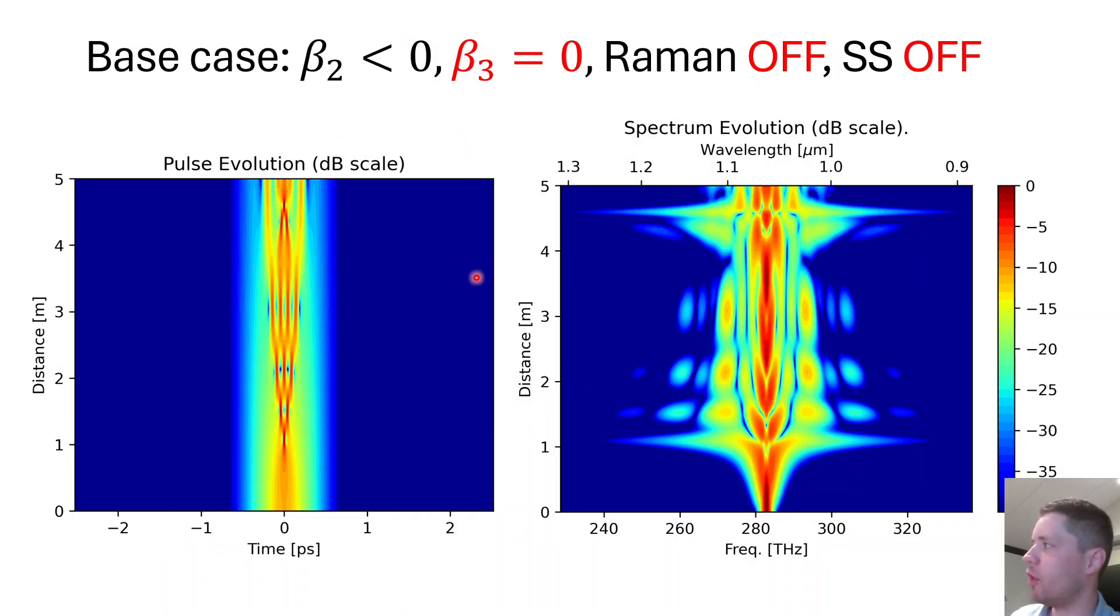First of all, this is the base case where we have a fiber with a negative beta-2 parameter which allows solitons to be formed and some kind of high power pulse that we're launching in. We can see it exhibits soliton behavior here because it first shrinks into a big powerful spike, then splits up into multiple sub-pulses that split up and merge as we propagate forward in a fairly predictable oscillatory way.